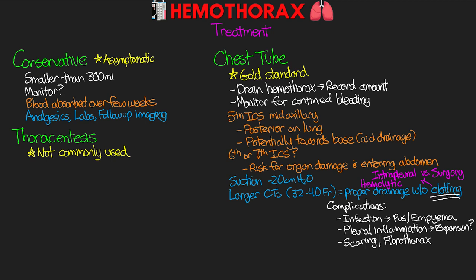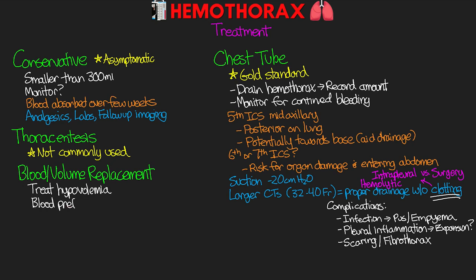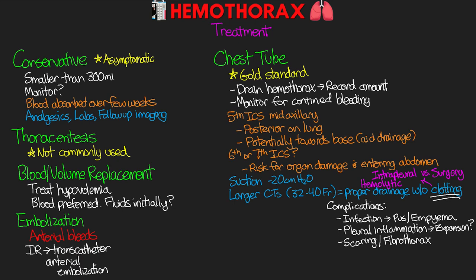Another treatment for hemothorax is blood and volume replacement. In cases of larger hemothoraxes, we may need to treat the patient's hypovolemia — blood is our preferred replacement, but fluids can also be used initially until blood becomes available. Another option is embolization: for larger bleeds from arterial sources, the patient can go to IR for a transcatheter arterial embolization to stop any ongoing bleeding.